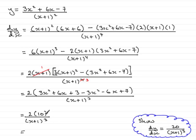And now we have 2 times 10, which is 20, all over x plus 1 all cubed. And there you go, we've shown it.